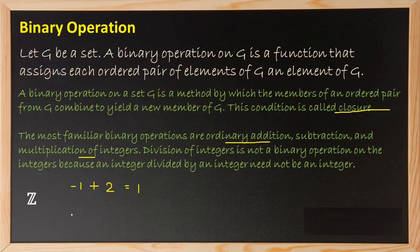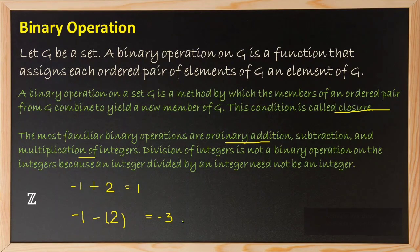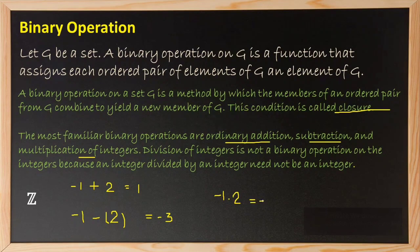Next, we check subtraction: minus 1 minus 2 gives minus 3, and negative 3 belongs to the set of integers. So subtraction is a binary operation on the set of integers. For multiplication: minus 1 times 2 gives minus 2, and minus 2 belongs to the set of integers. So multiplication is also a binary operation on integers — we say the set is closed under multiplication.